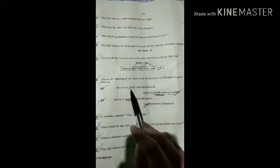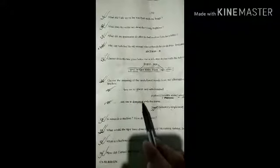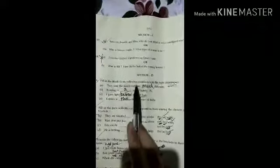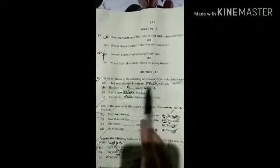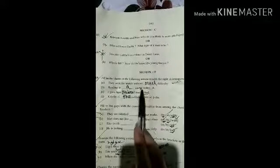Choose the meaning of the underlined words from the alternatives given in the brackets. Next section: fill in the blanks with the right determinants. They won the match without much difficulty. Reading is a useful hobby. I gave him the books I had.